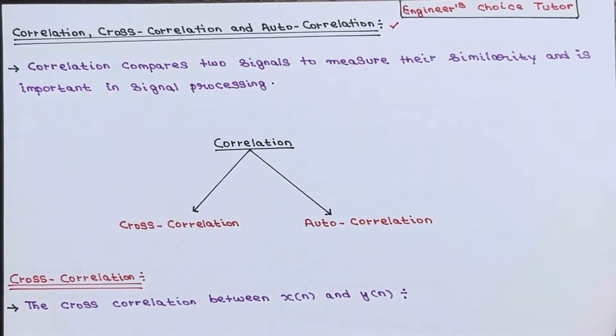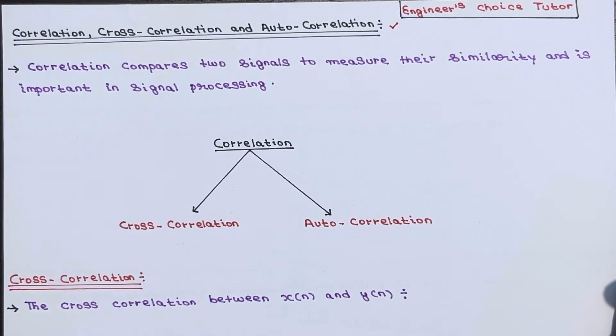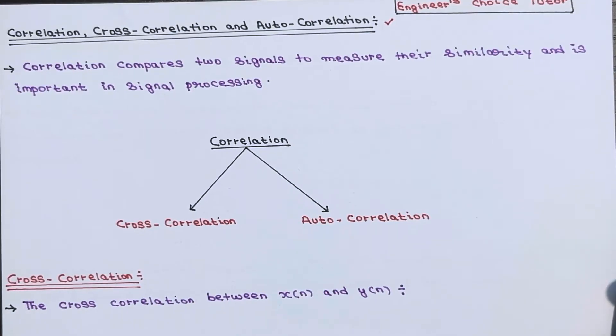So basically we have extensively covered convolving two signals to determine the output sequence y of n when x of n and h of n are known. Now let's discuss correlation which is basically a mathematical operation similar to convolution.